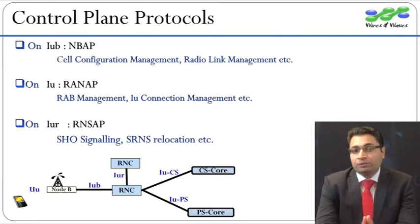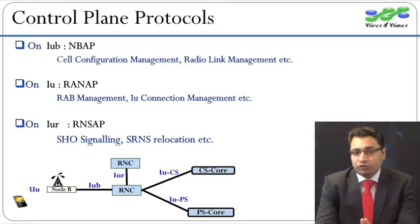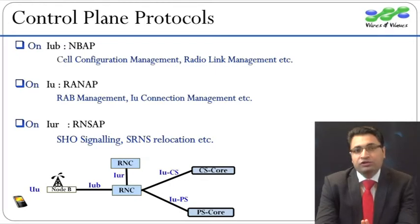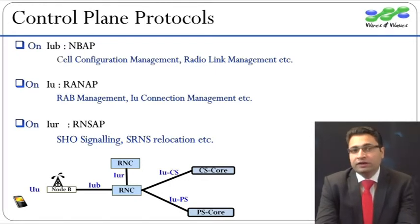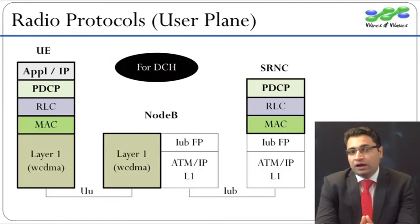Radio Network Subsystem Application Part, or RNSAP, is the signaling protocol on the IU-R interface. Its main function is to support inter-RNC soft handover-related signaling and serving RNC relocation.